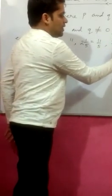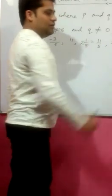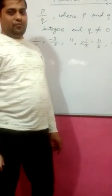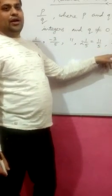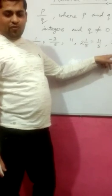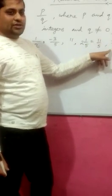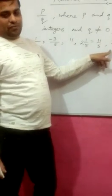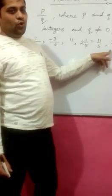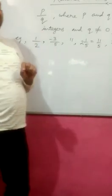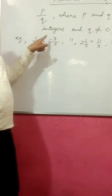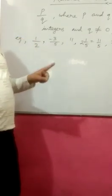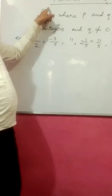If any number is like minus 3 by minus 11, this is also a rational number. Here you can see, the numerator and denominator both are negative integers. No problem at all. This is also an example of a rational number. Overall, any number which can be written in the form of P by Q, where P and Q both should be integers, that number represents rational numbers.